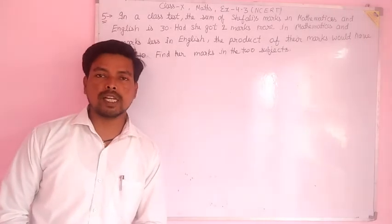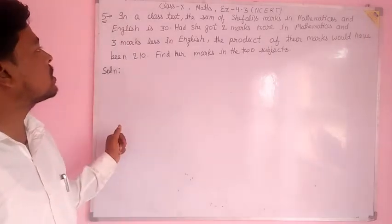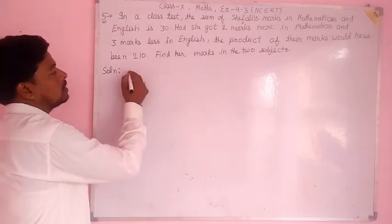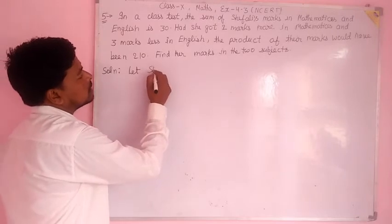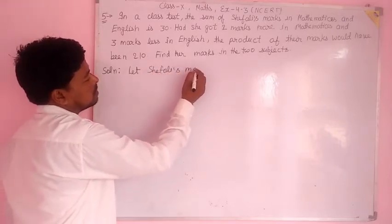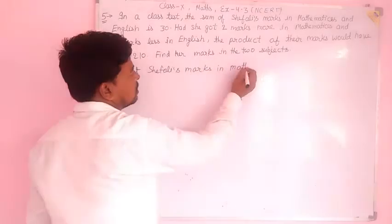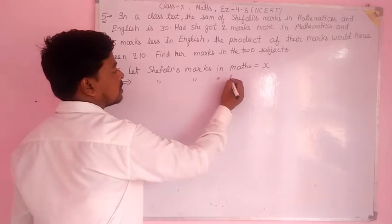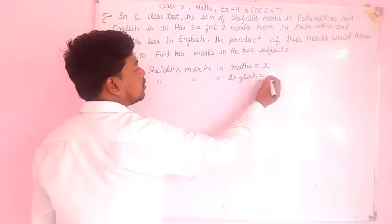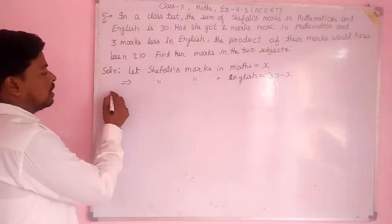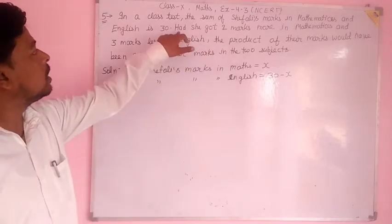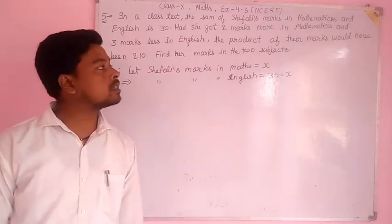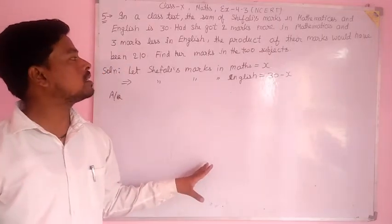This is question number 5 of Class 10 Mathematics Exercise 4.3. In a class test, the sum of Cephali's marks in mathematics and English is 30. So let Cephali's marks in maths be X. According to the question, had she got two marks more in maths and three marks less in English, the product of their marks would have been 210. Find her marks in two subjects.